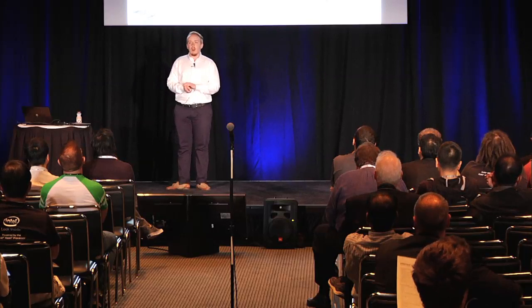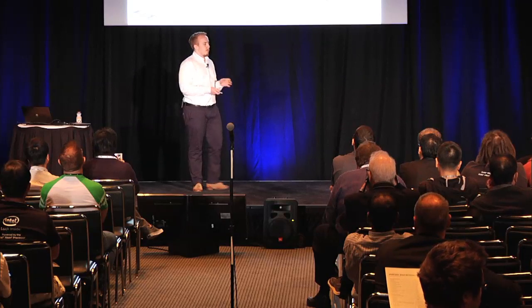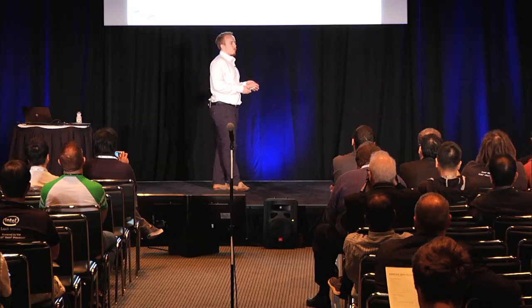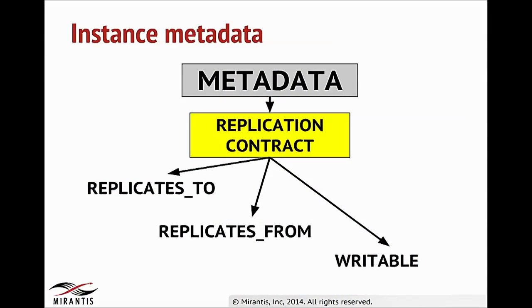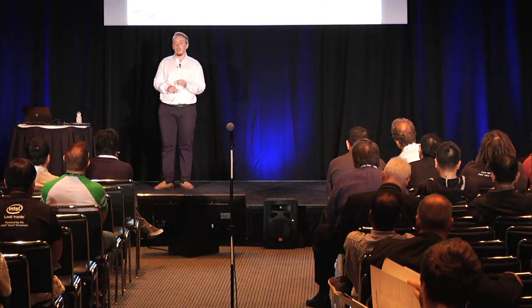We should ask ourselves: how do instances know about themselves, and how are users able to define which type of replication they want to build? The Trove community defined Trove Instance Metadata — it's a dictionary that stores specific data. The replication contract describes the way how instances are connected among themselves.